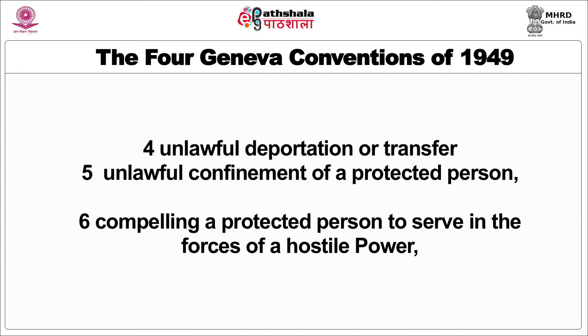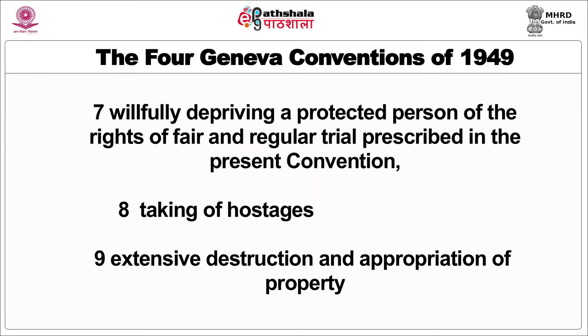Continuing the list of grave breaches under Article 147 of the 4th Geneva Convention: (4) unlawful deportation or transfer; (5) unlawful confinement of a protected person; (6) compelling a protected person to serve in the forces of a hostile power; (7) wilfully depriving a protected person of the rights of fair and regular trial prescribed in the present convention; (8) taking of hostages; and (9) extensive destruction and appropriation of property not justified by military necessity and carried out unlawfully and wantonly.